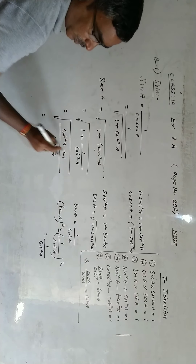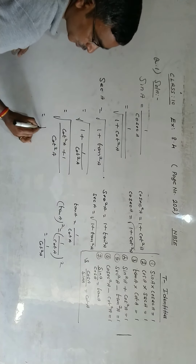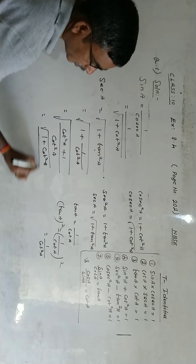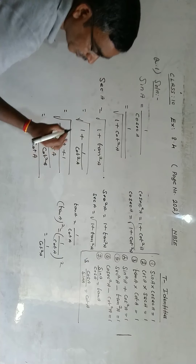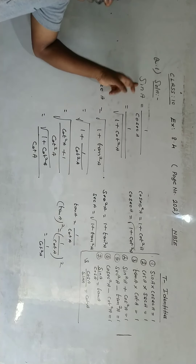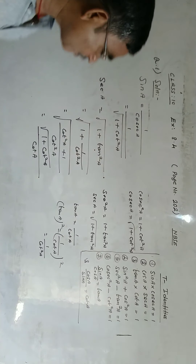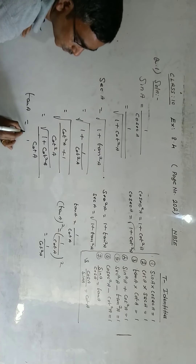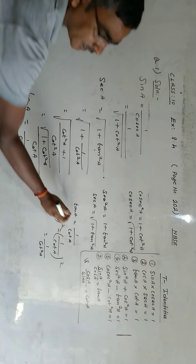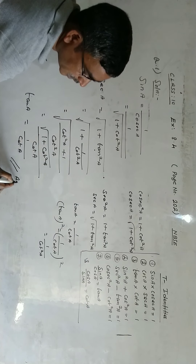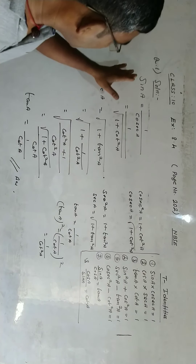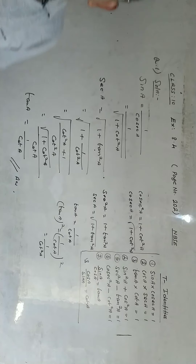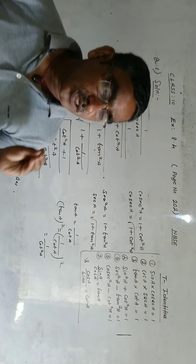We cannot simplify the square root of the numerator further, but the square root of cot squared a in the denominator becomes cot a. So sec a equals root over 1 plus cot squared a divided by cot a. That is our second result. For tan a in terms of cot a, directly: tan a equals 1 by cot a. So we have converted sin a, sec a, and tan a all in terms of cot a. Question one is complete — moving to question number two.